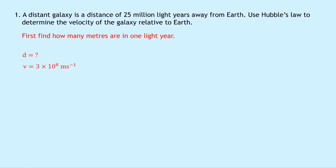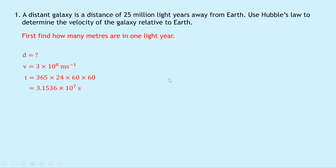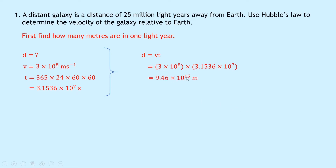So we're trying to find the distance. We know the speed v is 3 times 10 to the 8 meters per second for light, and to find how many seconds are in one year we do 365 times 24 times 60 times 60 — that's days in a year, hours in a day, minutes in an hour, and seconds in a minute. That gives around 3.1536 times 10 to the 7 seconds. I've not rounded this answer because it's important for the value of one light year. So d equals vt, and substituting in the numbers we get 3 times 10 to the 8 times 3.1536 times 10 to the 7, giving an answer of 9.46 times 10 to the 15 meters.